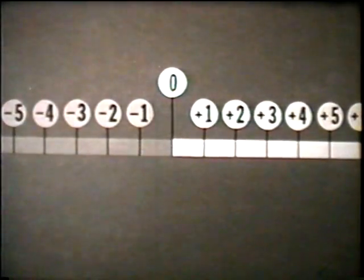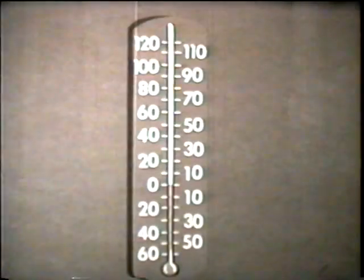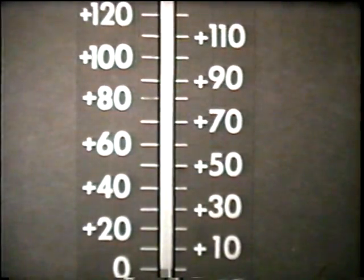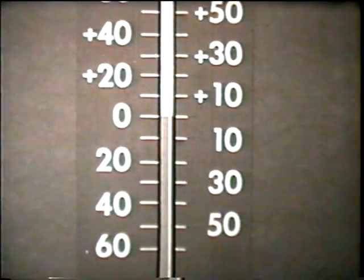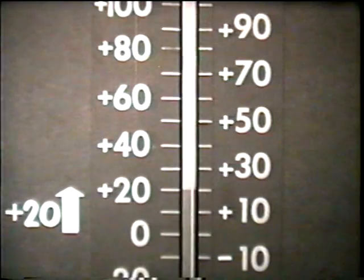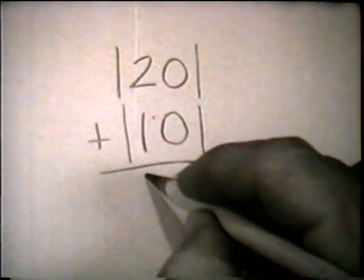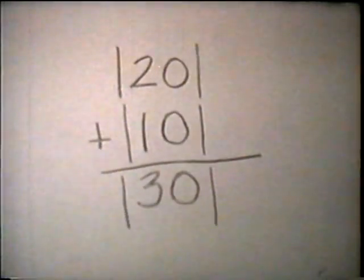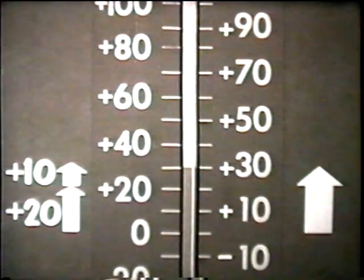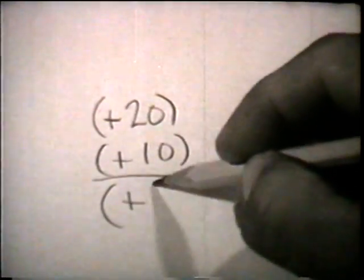Let's consider the rules for using positive and negative numbers. By reading a thermometer, we can illustrate the rules for adding signed numbers. You can think of a thermometer as a vertical number line. For temperatures above zero, we use positive numbers. For temperatures below zero, we use negative numbers. Let's suppose that the column moves up from zero to 20 degrees, then 10 more degrees. We find the overall change by adding the absolute value 20 to the absolute value 10. The answer is 30 — the total distance moved. Because both movements were in the positive direction, the result is positive 30. So the sum of positive 20 and positive 10 is positive 30.